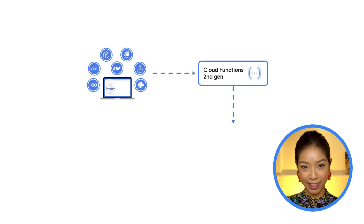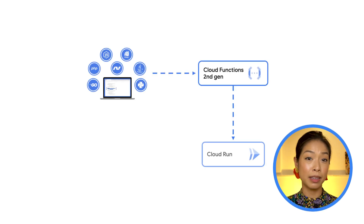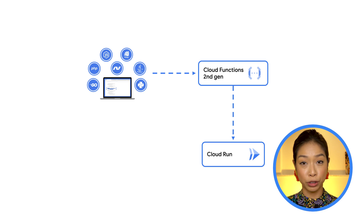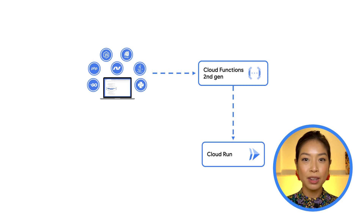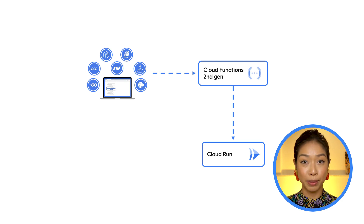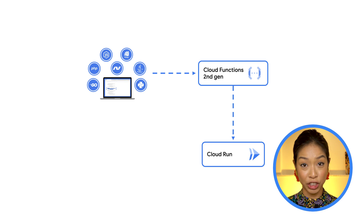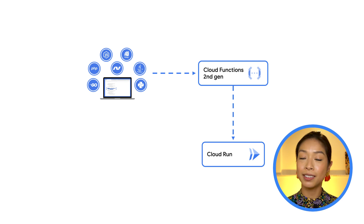It's worth sharing what powers the improved infrastructure of this new generation. Second Gen leverages Cloud Run under the hood, which is Google's Container as a Service platform. This is where new Second Gen functionality, such as concurrency and traffic splitting, comes from.